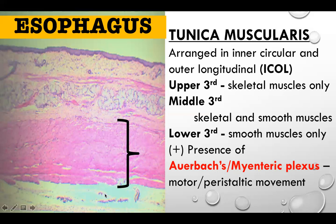In the tunica muscularis, all throughout the digestive tract, there is the Auerbach's or myenteric plexus, found in between the inner circular and outer longitudinal layers. When this plexus is stimulated, it promotes peristaltic movement — the inner circular and outer longitudinal muscles contract, producing peristalsis. That is why the Auerbach's or myenteric plexus is located in the middle.